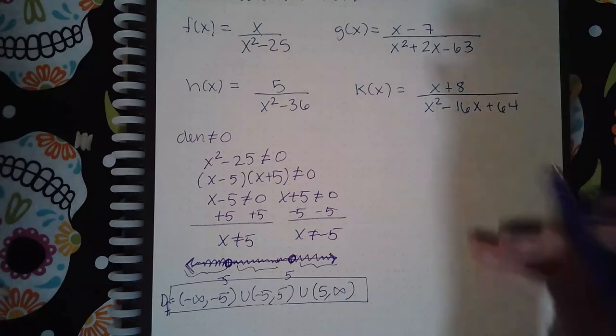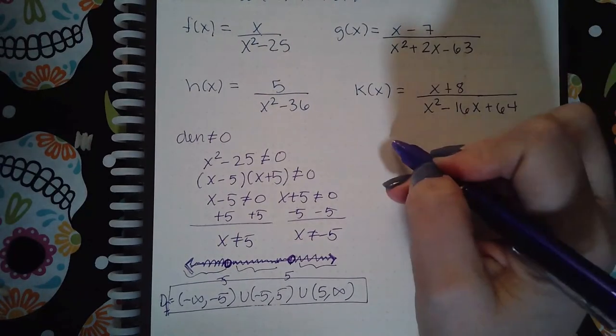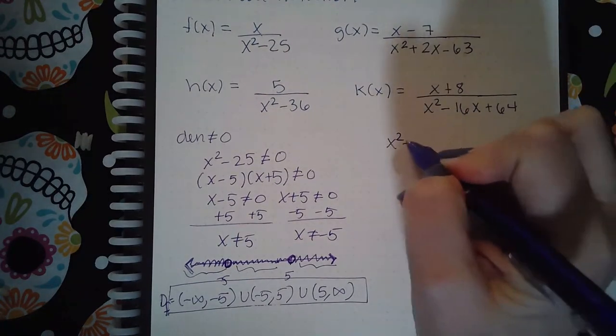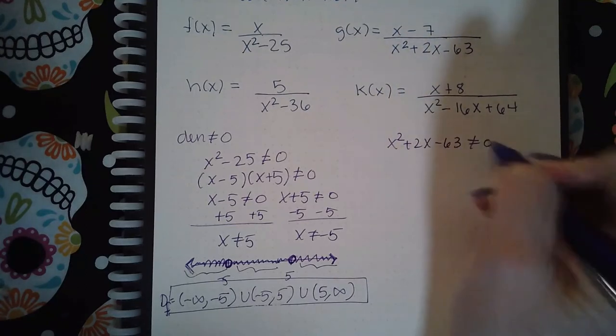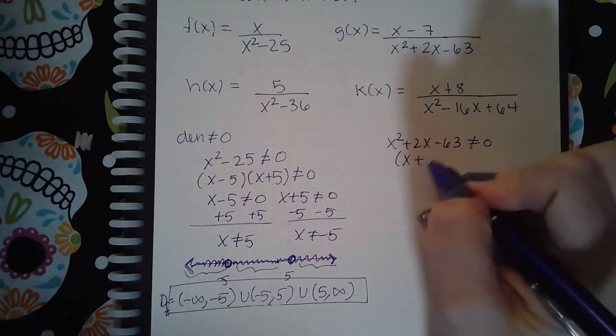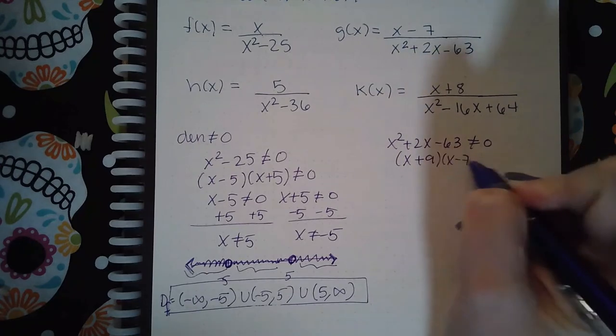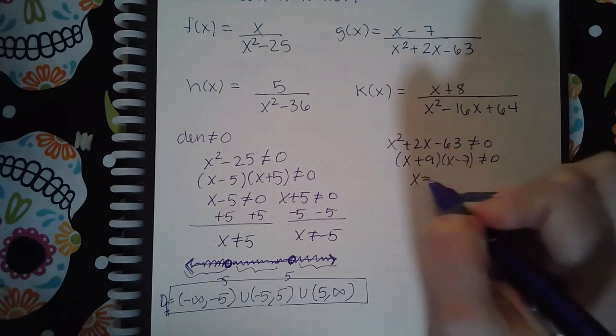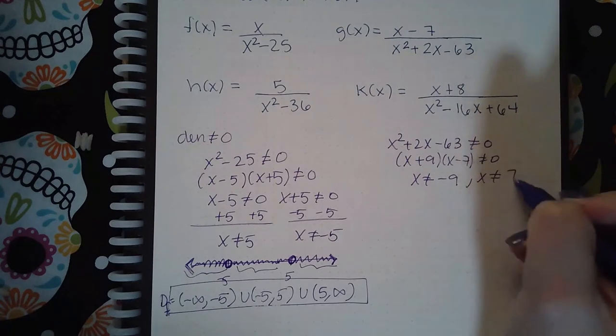Now we're going to do the same thing for the domain of g. So if I take that denominator and say that it cannot equal zero, and I factor it, I get that x cannot equal negative nine, and x cannot equal seven.